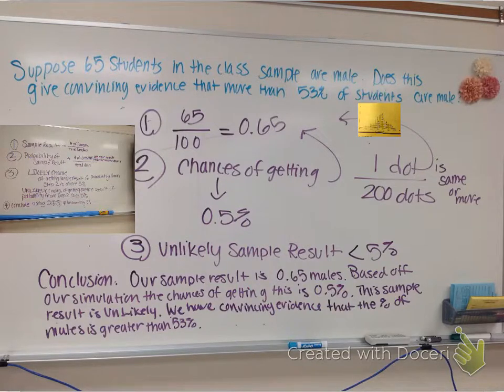Then the question, I think was part B, said, suppose 65 students in the class sample are male. Does this give convincing evidence that more than 53% of students are male? Step one, the sample result, the number of successes divided by the total sampled. This is what's happening here in the question. What's happening is I have 65 students in the class sample are male. So that's out of 100.